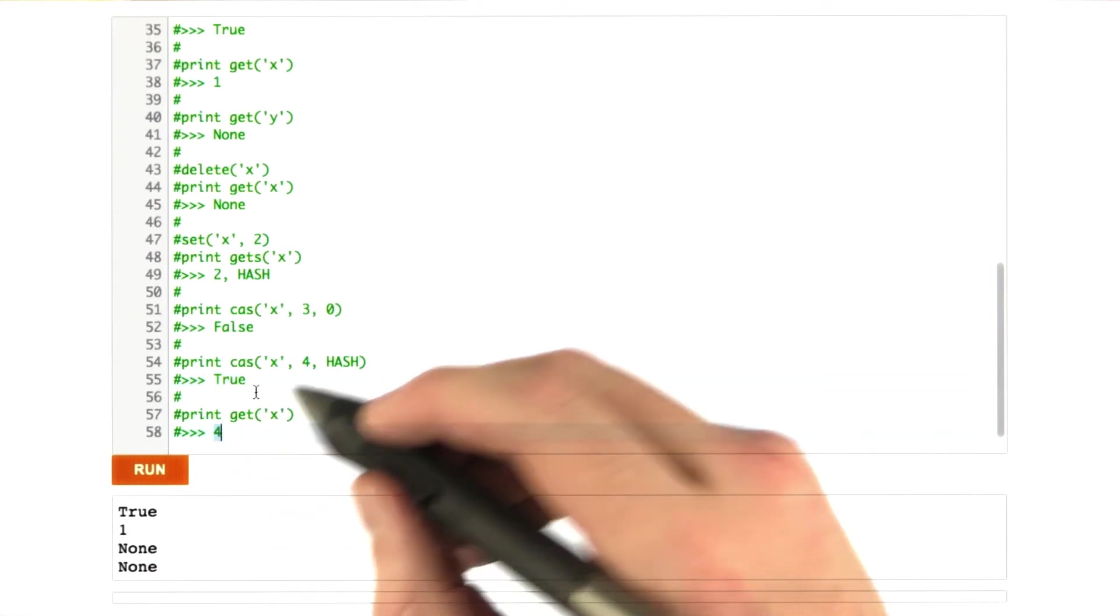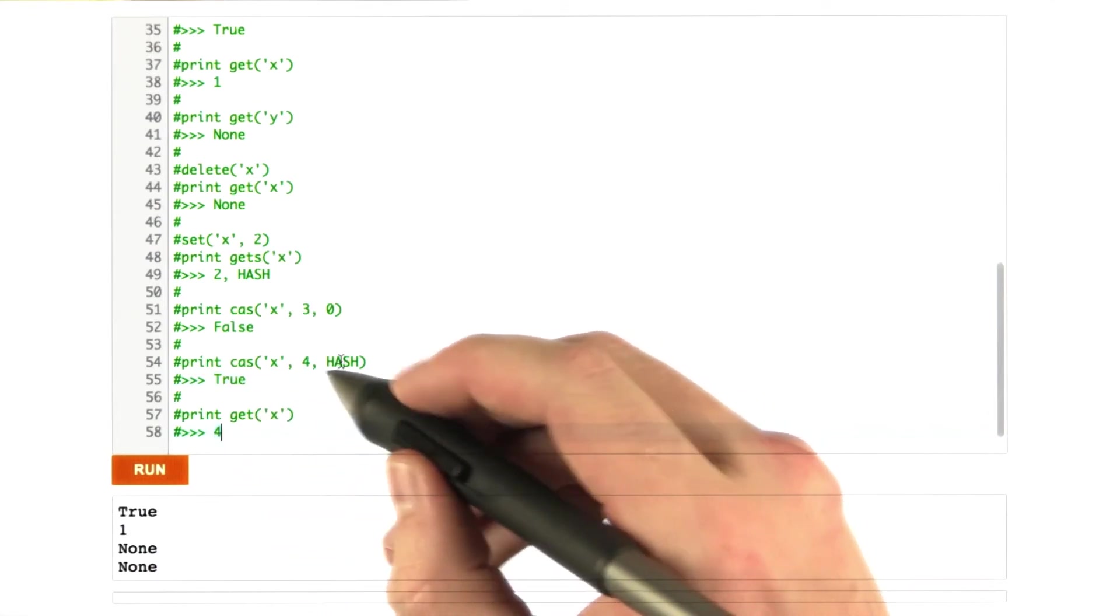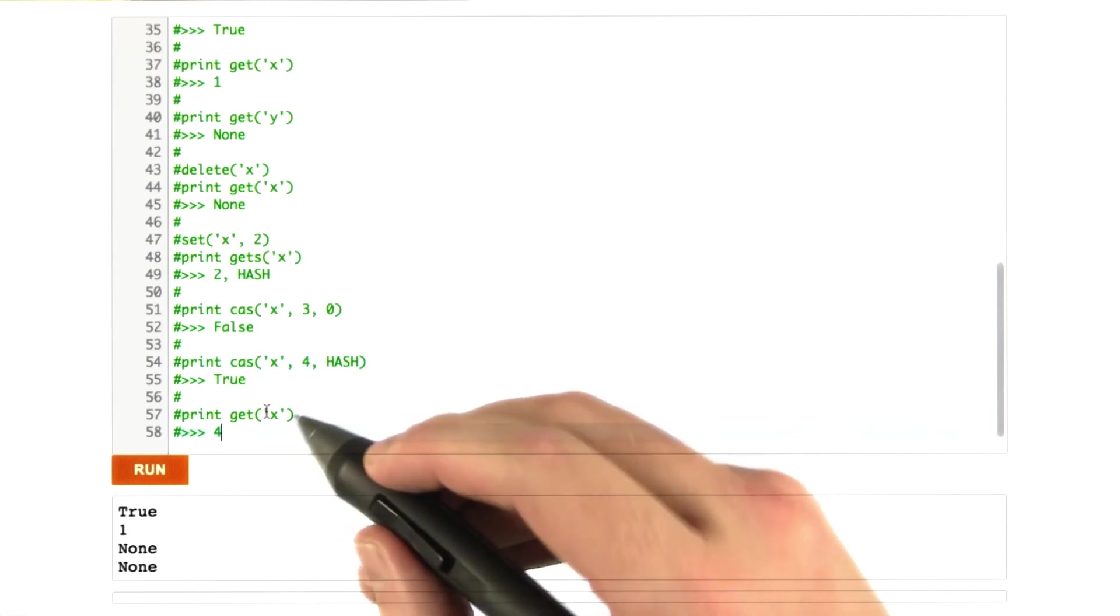And if we print get x, we should see the value 4, because that's what we set it to here. Okay, good luck with this.